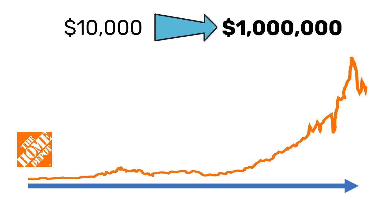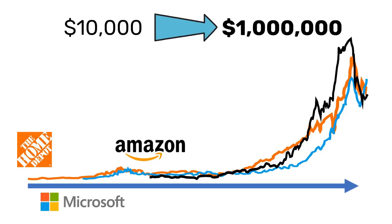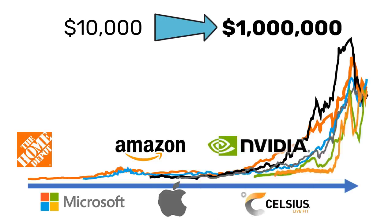The Home Depot would have given you millionaire status since 1991, Microsoft since 1995, Amazon since 2002, Apple since 2005, and companies like Nvidia and Celsius have managed to do it even quicker.